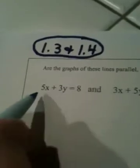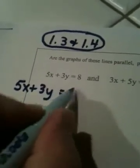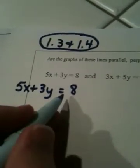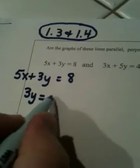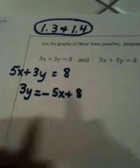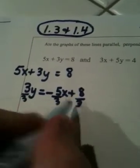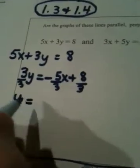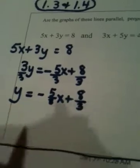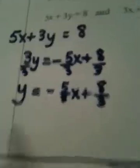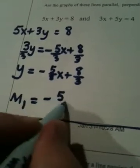So let's start here. I'm going to write this a little bigger: 5x plus 3y equals 8. If I subtract 5x from both sides, 3y equals negative 5x plus 8. And then when I divide by 3, I end up getting y equals negative 5 thirds x plus 8 thirds. So this is now in the correct form. m sub 1 is negative 5 thirds.